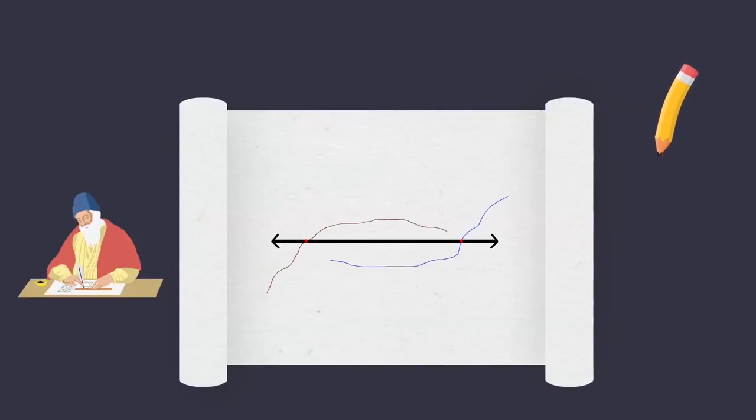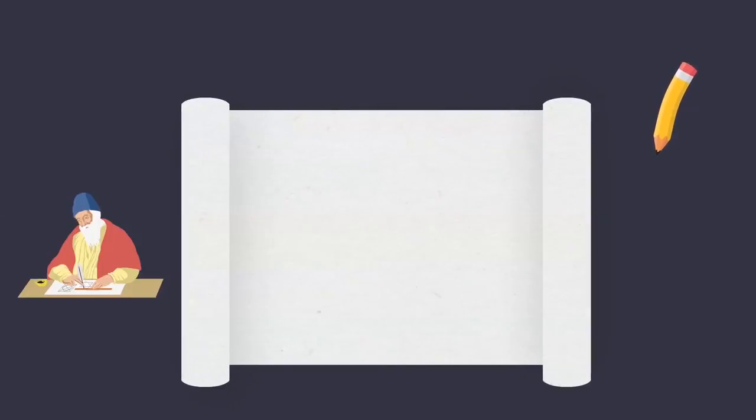The definitions of a point, a line, and a plane are not accepted by mathematicians today. Therefore, these terms are taken as undefined.